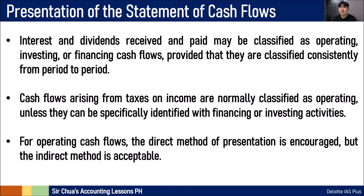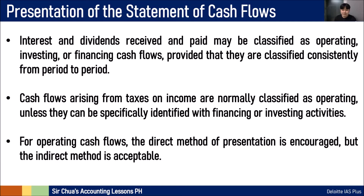In the case of interest and dividends received and paid, they can be classified as operating, investing, or financing — depending on the nature of the transaction — provided they are classified consistently from period to period. Cash flows arising from taxes on income are usually classified as operating, because taxes arise from operations, unless the entity can specifically identify certain transactions that relate to financing or investing activities, in which case they can be presented separately.